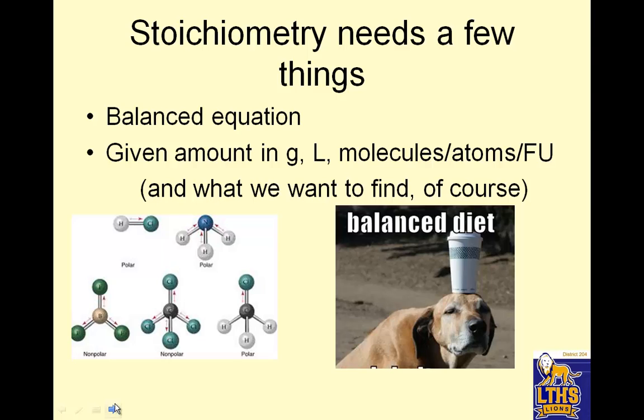In order to do stoichiometry, the mathematics of chemical equations, we need a few things. We need a balanced equation, we need a given amount in grams, liters, or molecules, atoms, or formula units, and what we want to find, of course. A balanced equation, a starting, and an ending amount.